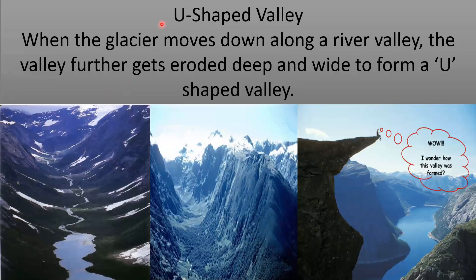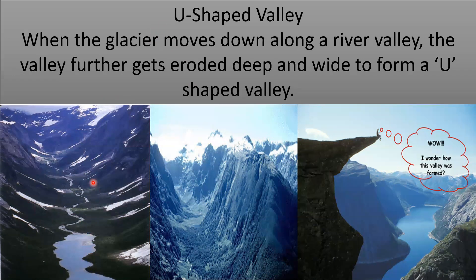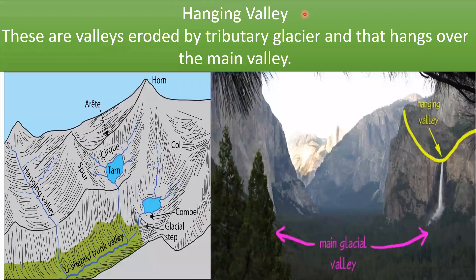U-shaped valley: When glaciers move down along a river valley, the valley gets eroded both deep and wide to form a U-shaped valley. In contrast, rivers form a deep, narrow V-shaped valley, whereas glaciers form a wide U-shaped valley. This is the result of glacial erosion.